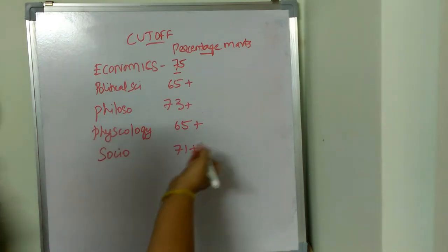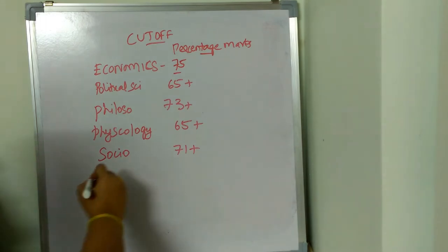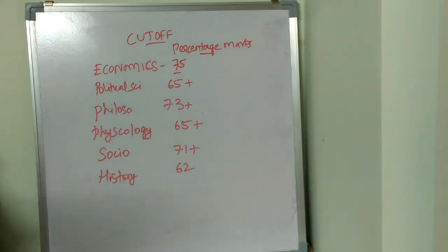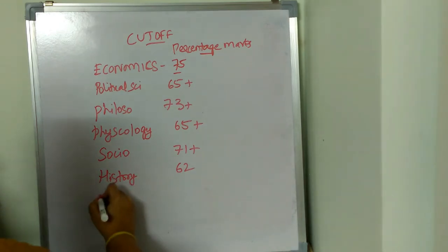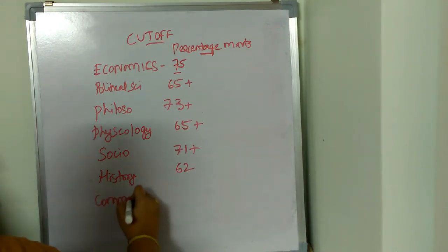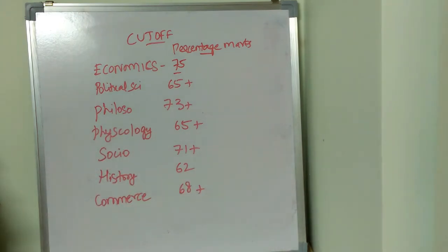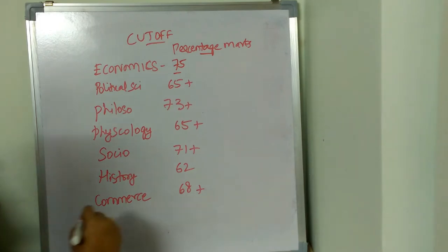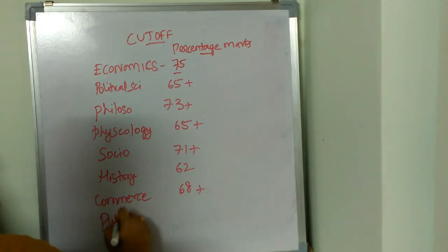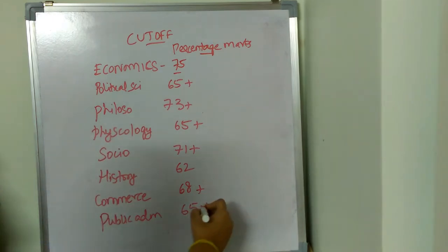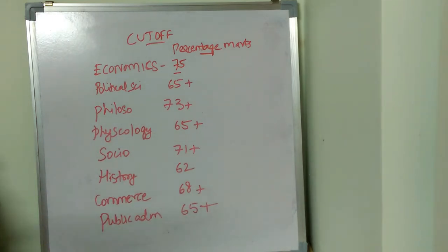Coming to sociology, the cutoff is going to be 71 plus. Coming to history, the cutoff is going to be around 62. And coming to commerce, the cutoff is going to be 68 plus. Coming to public administration, the cutoff is going to be 65 plus.